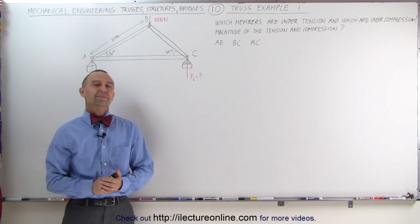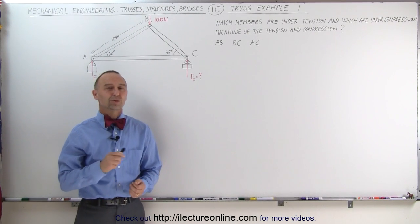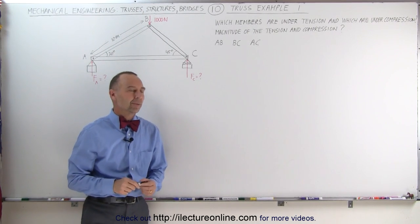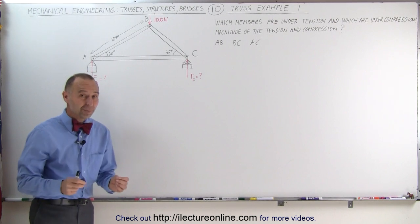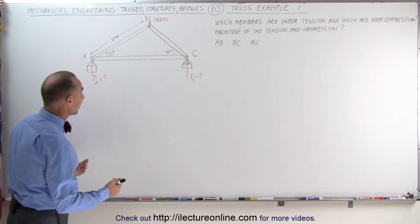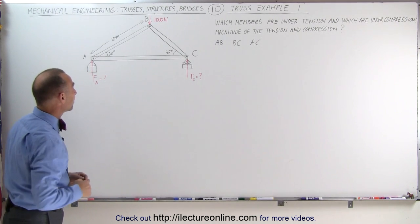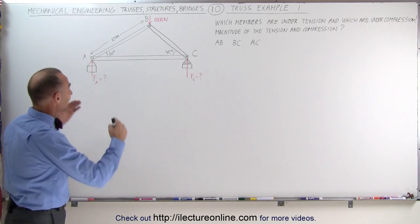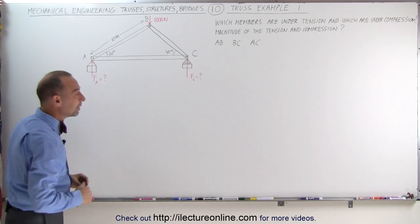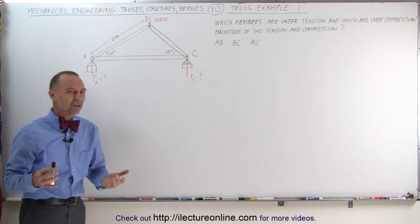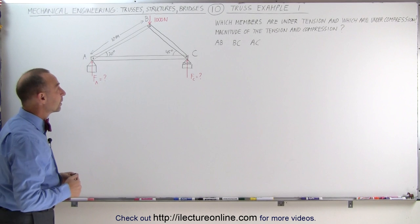Welcome to ElectronLine. Here's our first example of how to do a truss problem. This is a very simple truss — there are no vertical members, just the two slanted members and one at the bottom. But it's actually a really good example to see how to solve one of these.